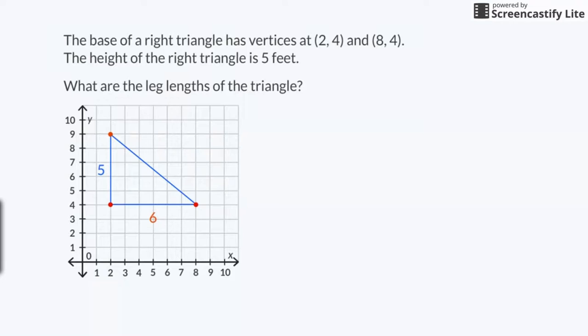The next question I need to answer is, what is the area of the triangle? To find the area, I need to know the length of the base and the height. In a right triangle, those are the lengths of the perpendicular legs. I just found those lengths. The legs are 5 feet and 6 feet long. To find the area, multiply the base times the height and divide that product by 2.